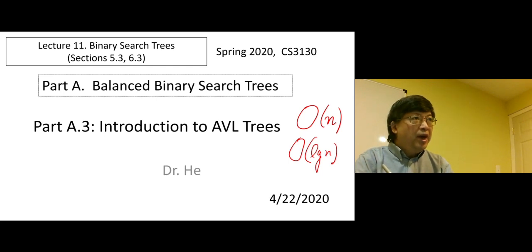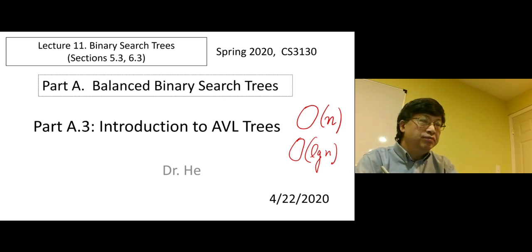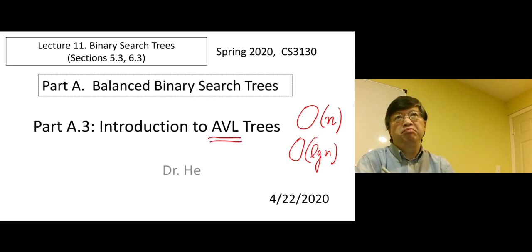For the remaining part, we will learn two types of balanced binary search trees. This is the first type, AVL trees.